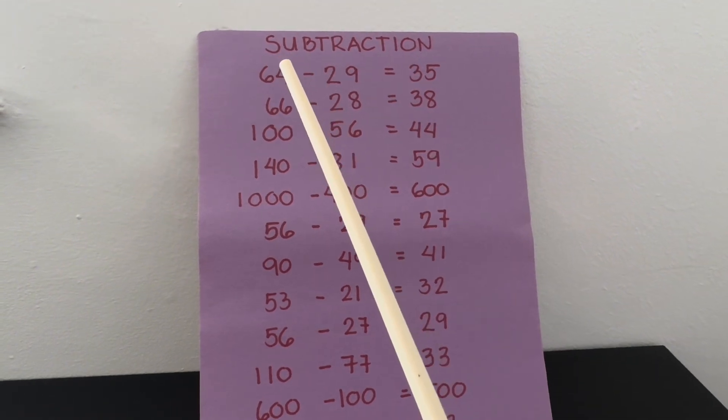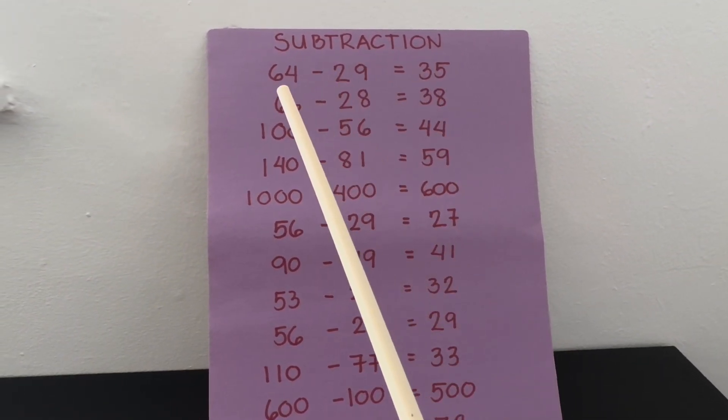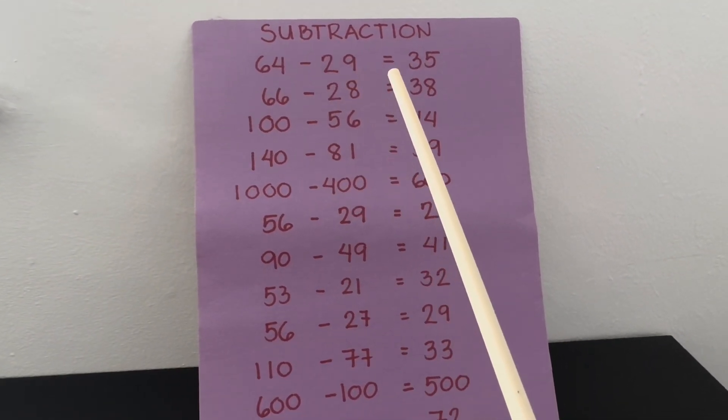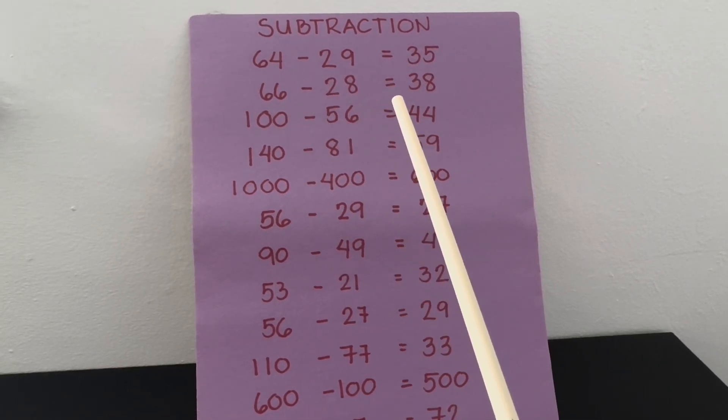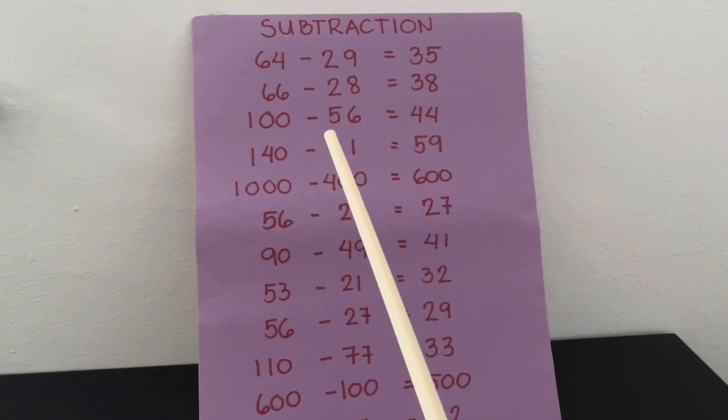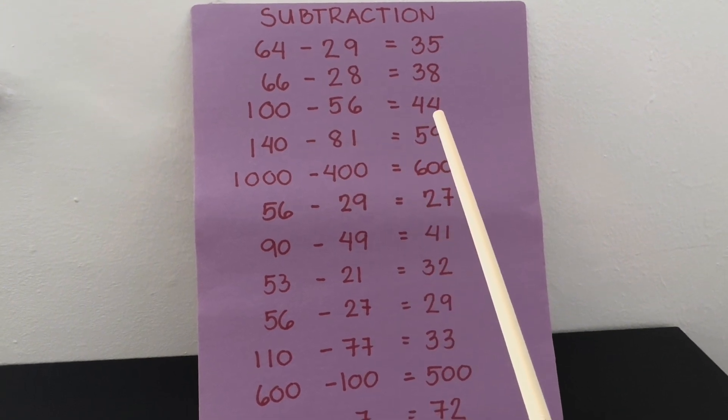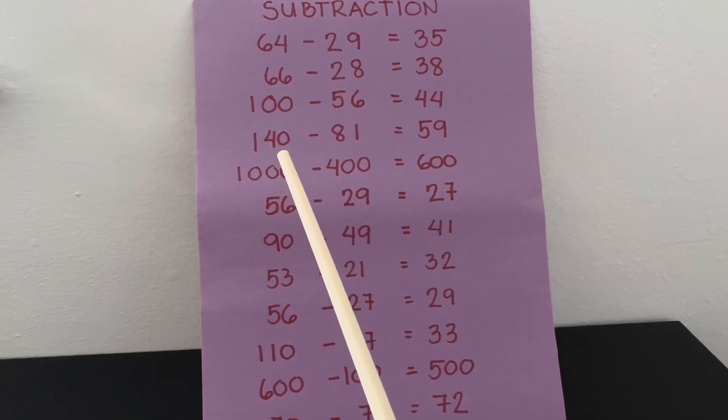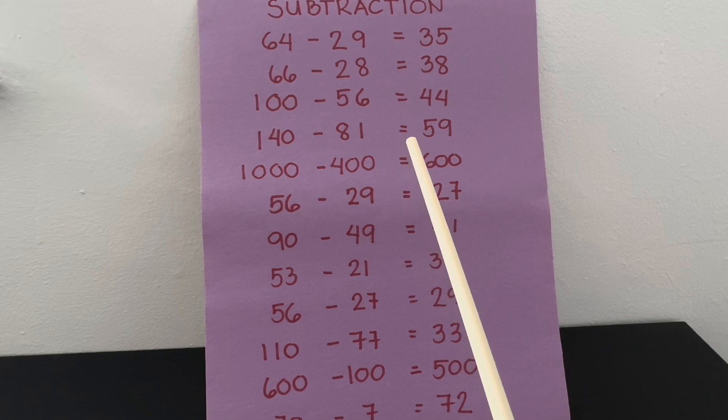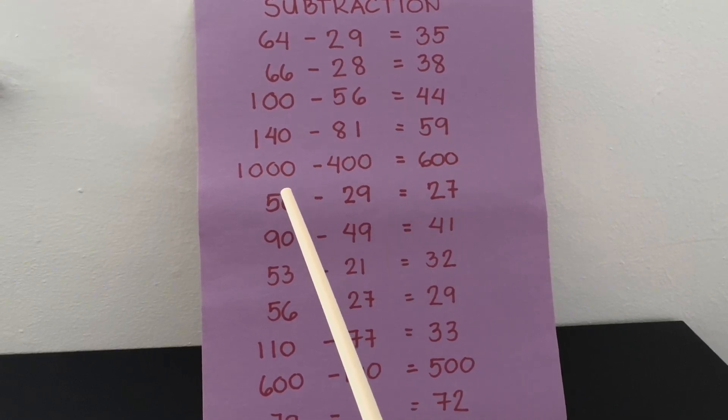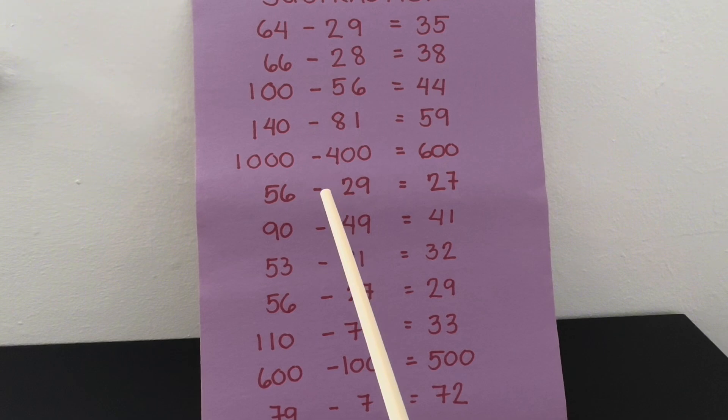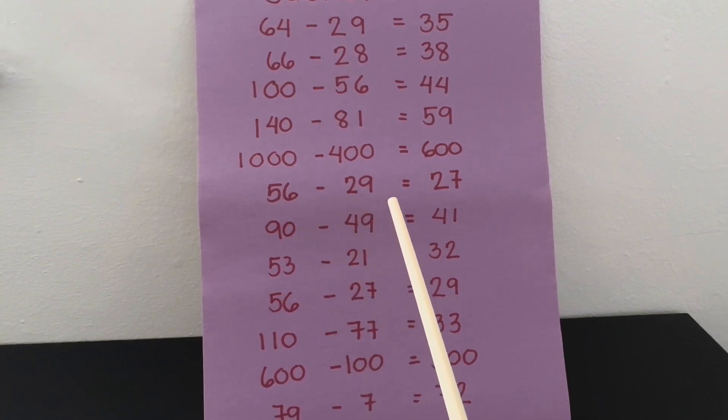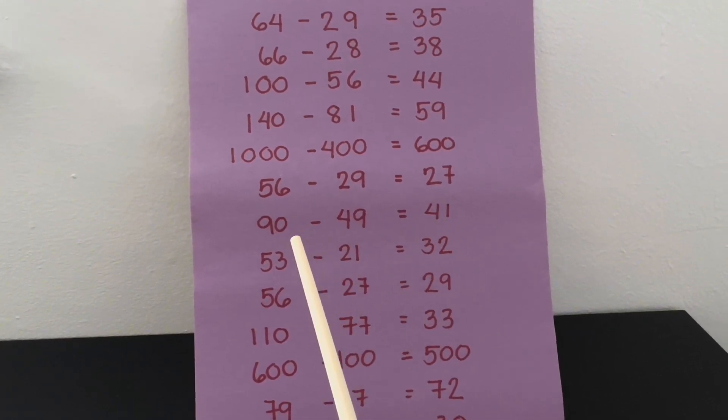Let's try subtraction. 64 minus 29 equals 35. 66 minus 28 equals 38. 100 minus 56 equals 44. 140 minus 81 equals 59. 1,000 minus 400 equals 600. 56 minus 29 equals 27.